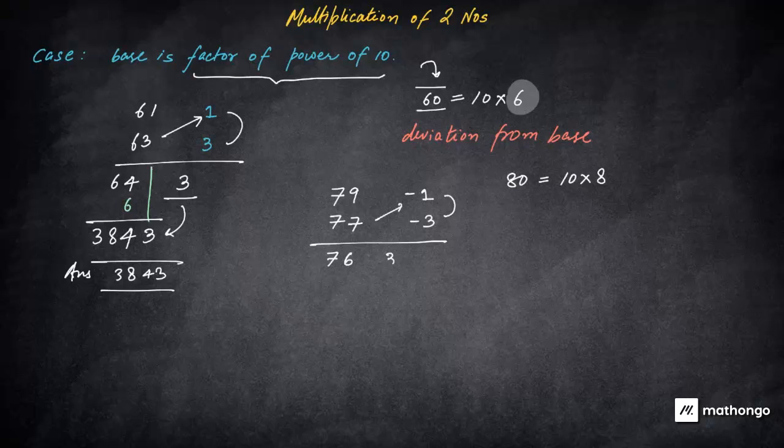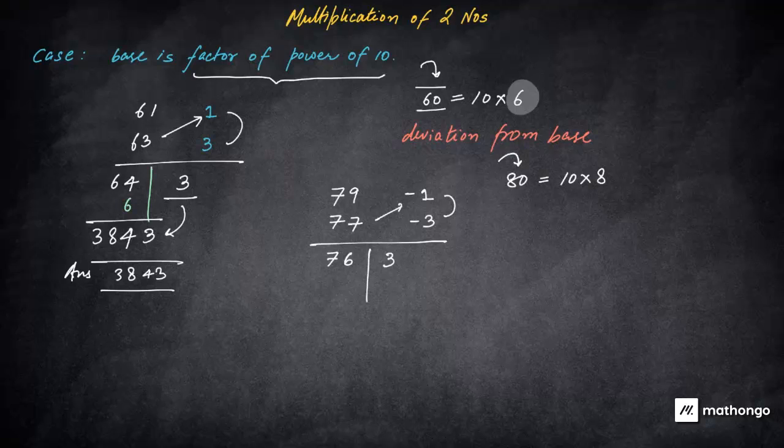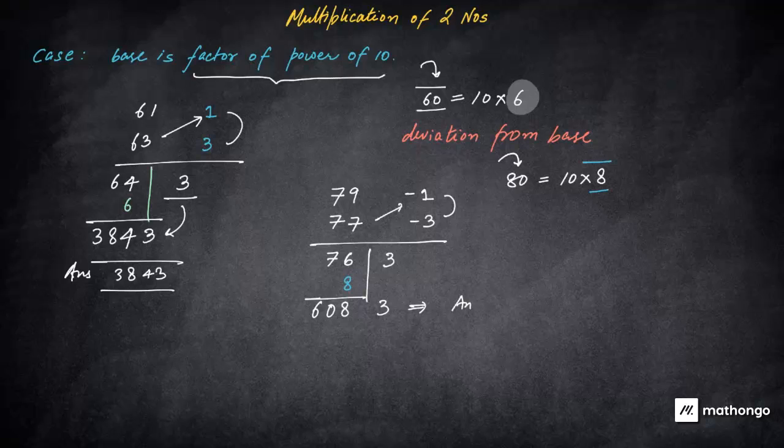What you will do cross add, if you do the cross add, this will be 76. Multiplication will be three, you will say 03 or three, only three because the base has only one zero. Now only thing left is that you will multiply this left hand side number by eight, why? Because you have 10 multiplied by eight here. So if you do this, this will give you 608. And this three will also come to the final answer for this particular product is 6083. That is the answer.